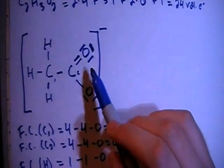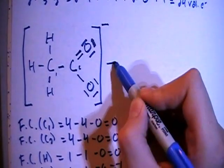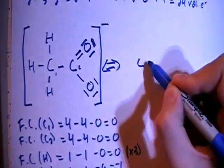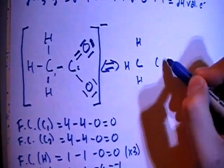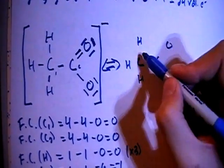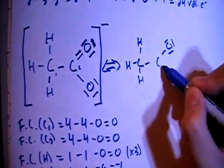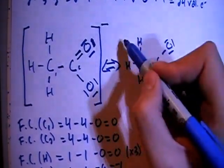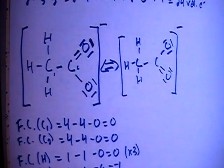Now notice, we just happen to choose this oxygen to have the double bond instead of this one. That's going to lead to having a resonance structure where we choose the other oxygen to have the double bond. So now the top's going to have a single, and the bottom oxygen will have a double bond. And there we go. There are our two structures.